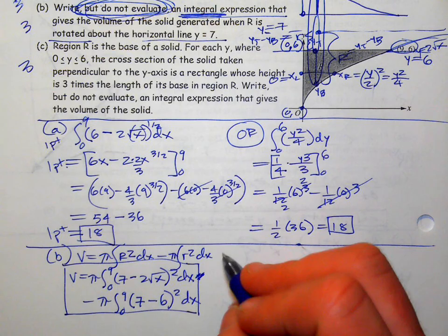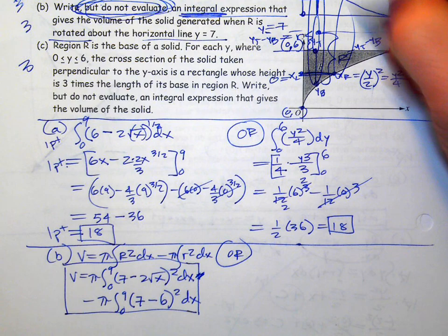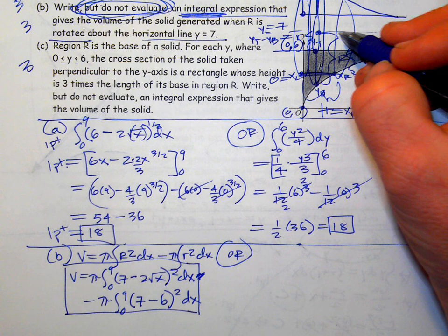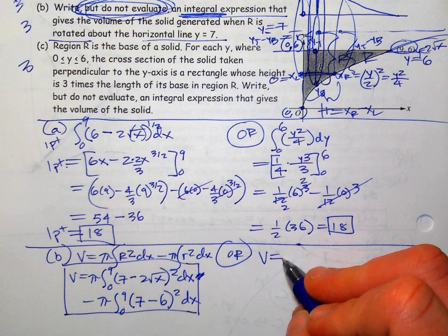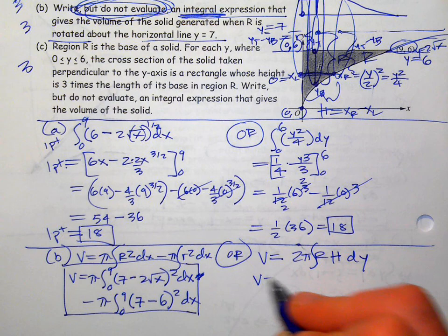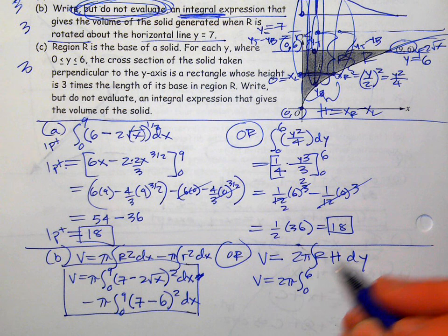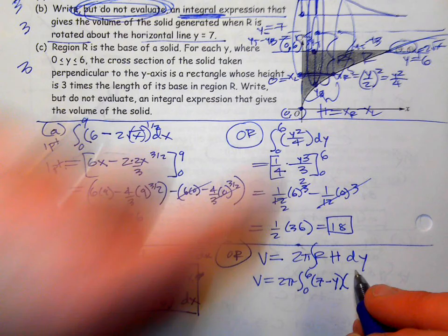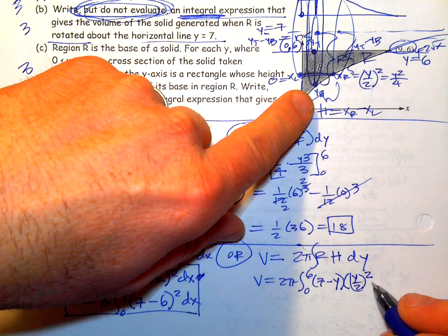Or you could use horizontal slices — that gives shells. The shell has a height of x-right minus x-left, and the radius is the distance from y to the axis y = 7. Volume with shells: 2π ∫₀⁶ (7 − y)(y²/4) dy. Either approach gets full credit. The scoring guidelines usually only present the disk/washer method, but they don't require it.